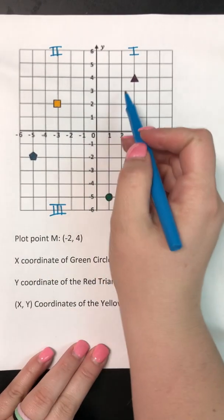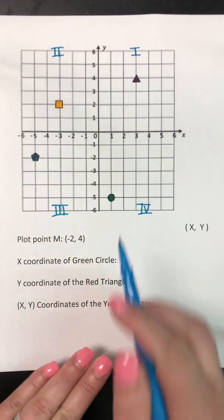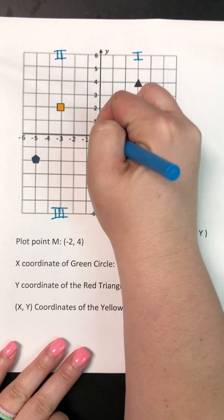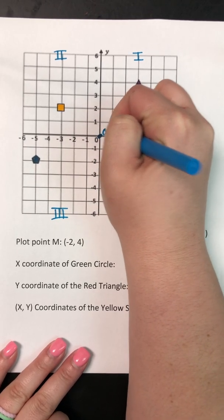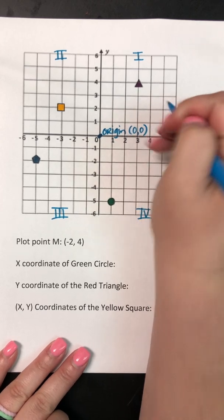And to remember them you can make the letter C. So 1, 2, 3, 4. And then the very center is called the origin and its point is 0, 0.